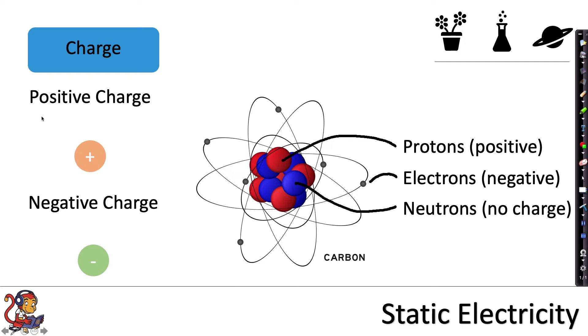So when we're talking about positive and negative charge, if we look inside an atom we will see positive charges as protons and negative charges which are our electrons.